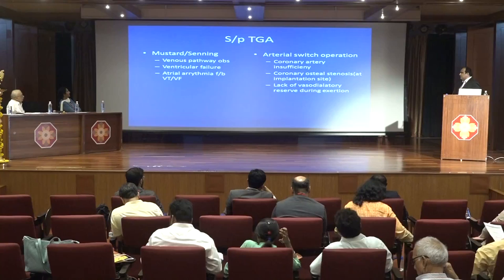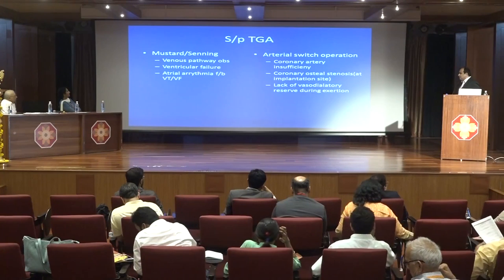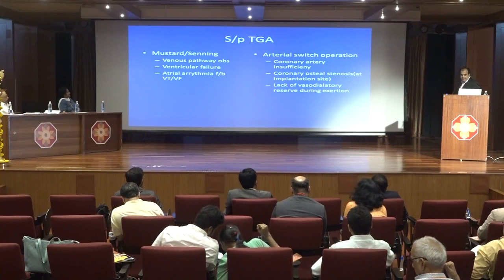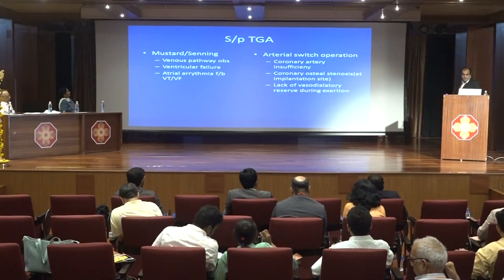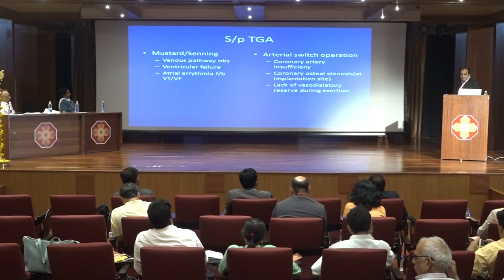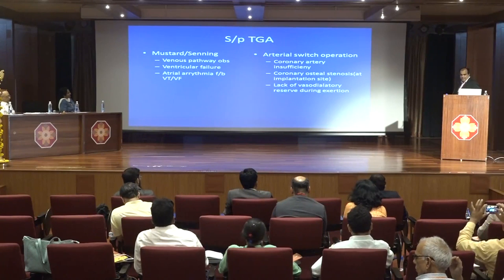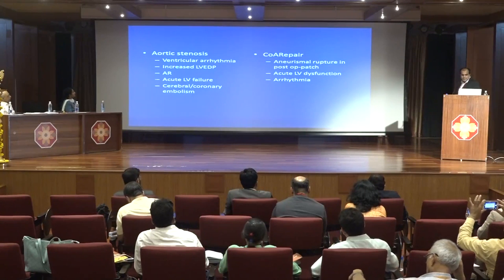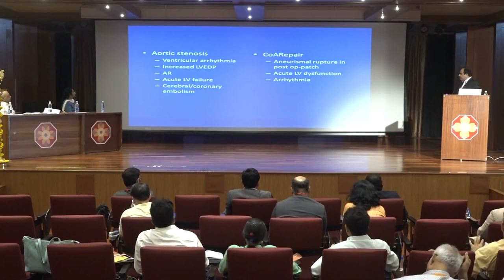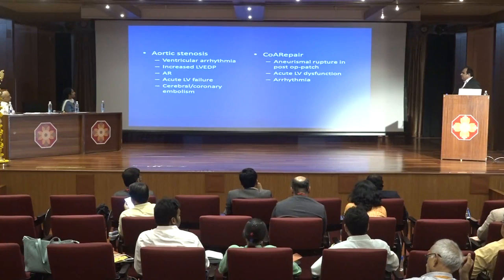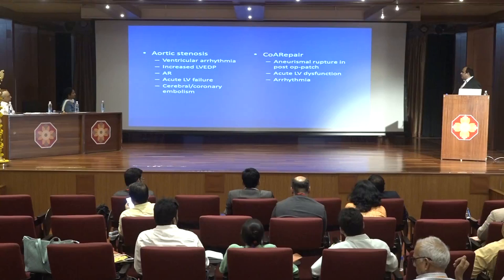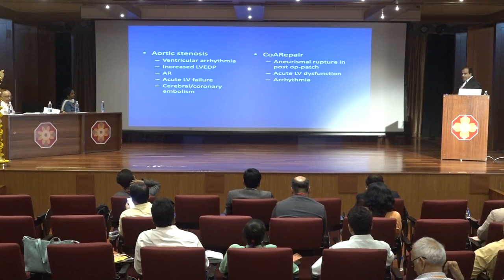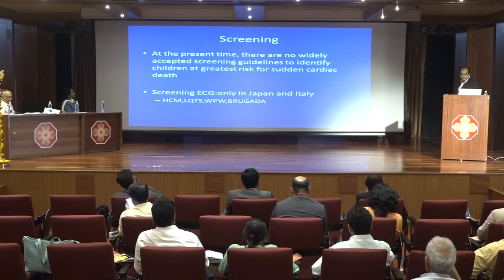After Mustard or Senning procedure for TGA, causes of SCD include ventricular failure, venous pathway obstruction, and atrial then ventricular arrhythmias. After arterial switch operation, causes include coronary ostial stenosis or lack of vasodilatory reserve during exertion. In aortic stenosis, causes are acute LV failure, increased LVEDP, and ventricular arrhythmias. After coarctation repair, aneurysmal rupture of the post-op patch, acute LV dysfunction, or arrhythmias can lead to SCD.